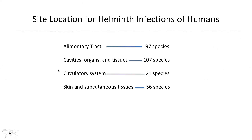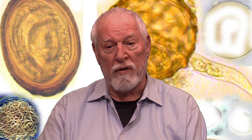Helminths — including nematodes, cestodes, and trematodes — occupy a variety of places in the body, primarily the alimentary tract. The small and large intestine are favorite sites because that's the first place they encounter after we ingest them. Very few can actually penetrate unbroken skin, but there are some that can do that as well. They can occupy body cavities, the cerebrospinal fluid, various organs and tissues, and the circulatory system. The filarial parasites are certainly in that category, and they can also infect the lymphatics. And 56 different species of helminths have been known to stay within the skin or subcutaneous tissues.